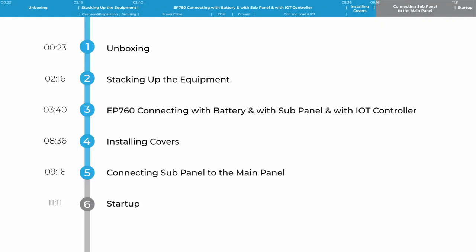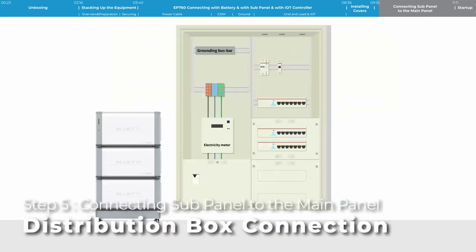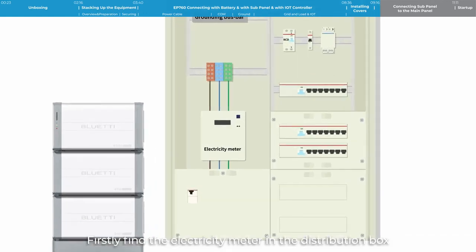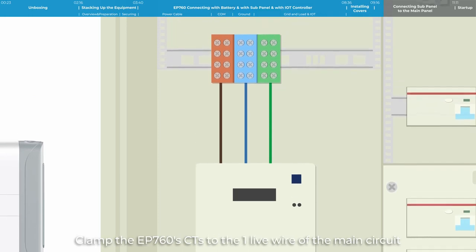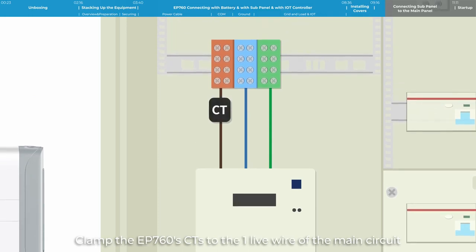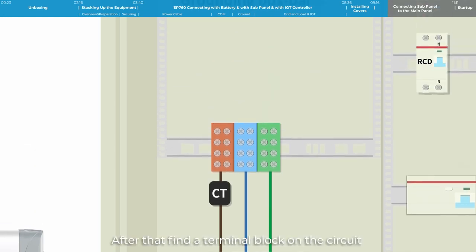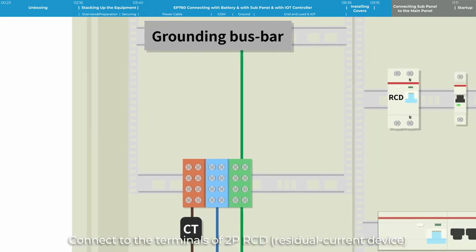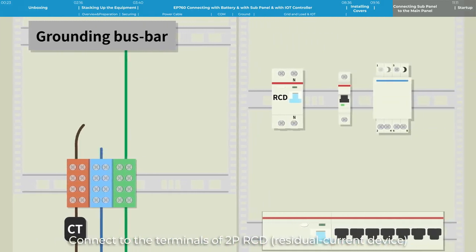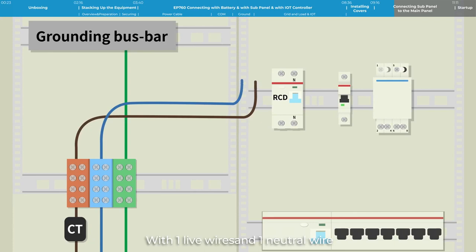Step 5: Connect with subpanel into the main panel. Firstly, find the electricity meter in the distribution box. Clamp the EP760's CT to one live wire of the main circuit. The arrow points to the grid. After that, find a terminal block on the circuit or somewhere around the bus bar. Connect to the terminals of 2P RCD, residual current device, with one live wire and one neutral wire. The sequence from left to right is L N.